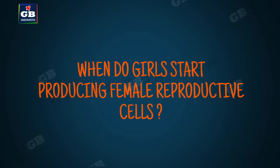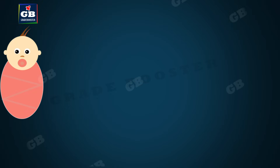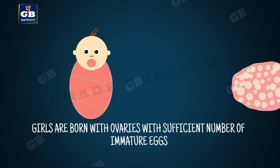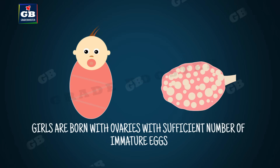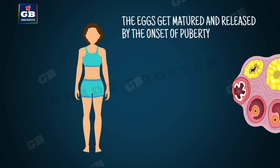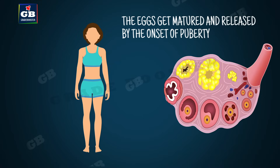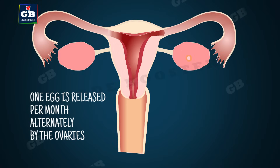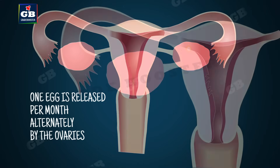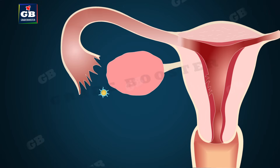When a girl is born, the ovaries already contain thousands of immature eggs. By reaching puberty, the eggs start maturing — one egg is produced every month by one of the ovaries. The egg released by the ovary is collected in the fallopian tube.